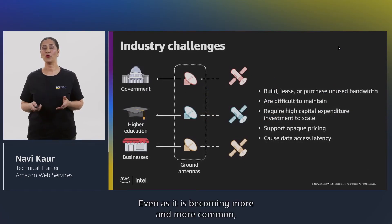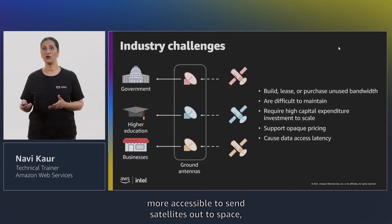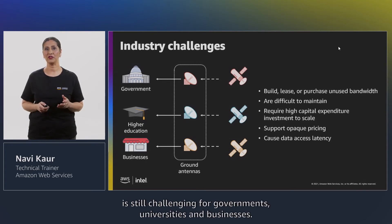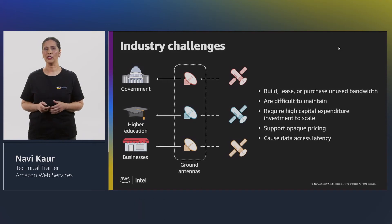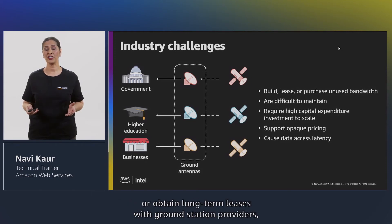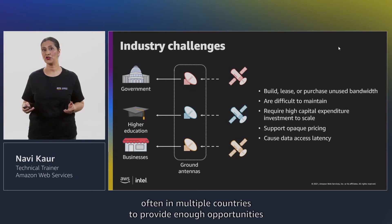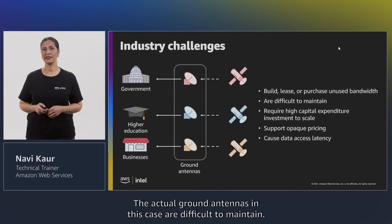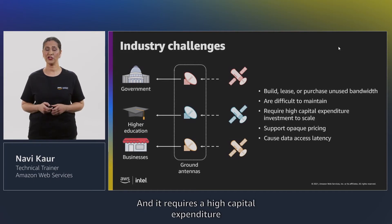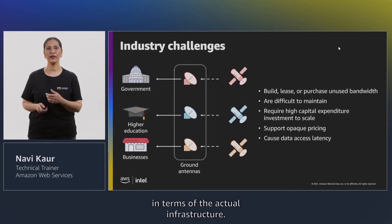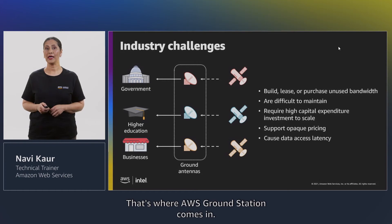Even as it's becoming more common and accessible to send satellites to space, the infrastructure required to collect data back is still challenging for governments, universities, and businesses. Today you must either build your own ground stations and antennas, or obtain long-term leases with ground station providers — often in other countries — to provide enough opportunities to contact satellites as they orbit the globe. The actual ground antennas are difficult to maintain and require high capital expenditure to scale up and collect that data. That's where AWS Ground Station comes in.